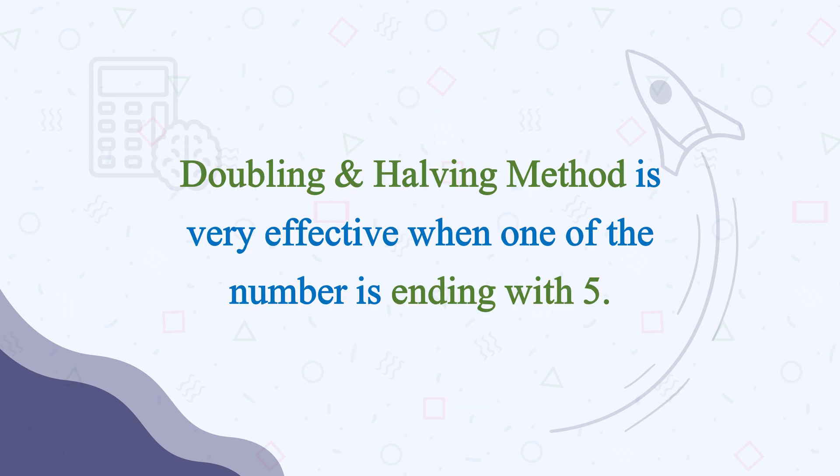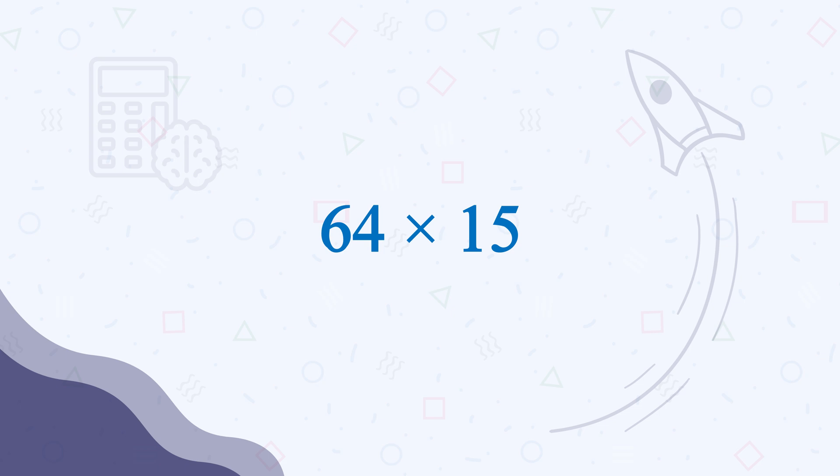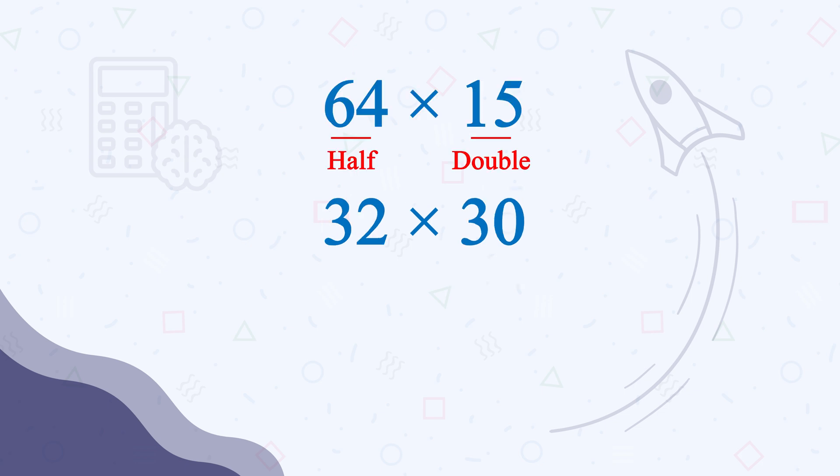Now coming back to the doubling and halving method, this method is very effective when one of the numbers is ending with 5. For example, 64 times 15. If you double the number carrying 5 at the end, the calculation will be super easy for you. So take half of 64, which will be 32, and then make 15 double, which is 30.